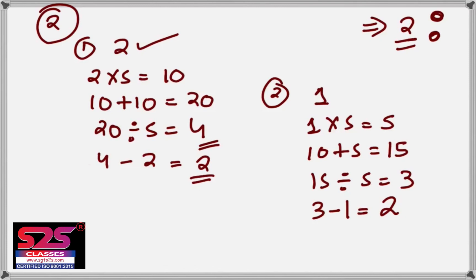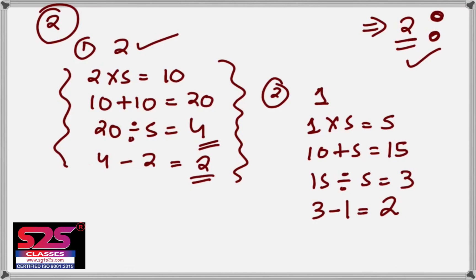In this trick, if you follow the steps, the final answer will always be 2 for any whole number between 1 to 10. I'll attach the steps at the end of the video. I hope both tricks are clear and you can enjoy doing them with people and say you can read minds — but in the end, it's just a trick of numbers and mathematical calculations. Do subscribe to our YouTube channel for more such videos. Thank you.